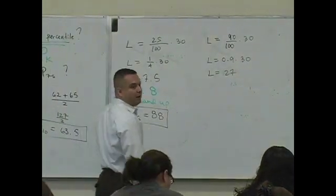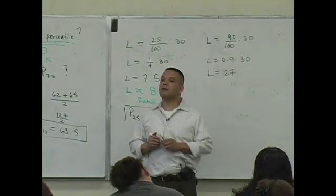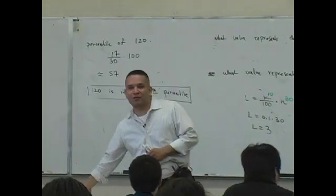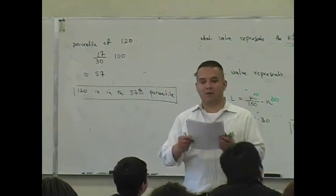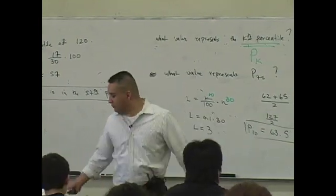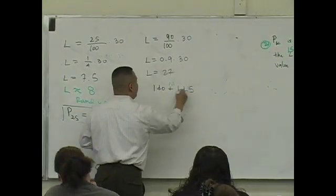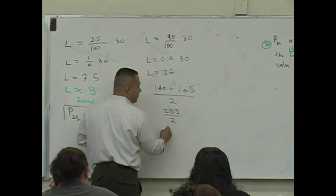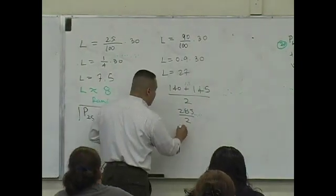The answer is what? What's the answer? What do you guys look for? The what? The 27th and the? 28. 28th score. 145. 145, 145, 140. 140 plus 145 divided by 2 is? 285 divided by 2. What's that? 142.5.